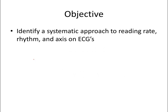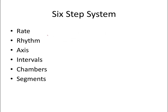The objective of this video is to identify a systematic approach to reading the rate, rhythm, and axis on ECGs. Fully reading an ECG is actually a six-step system, but for this video we're going to start off with the first three: the rate, rhythm, and axis. The intervals, chambers, and segments we're going to cover in TBL on Thursday.